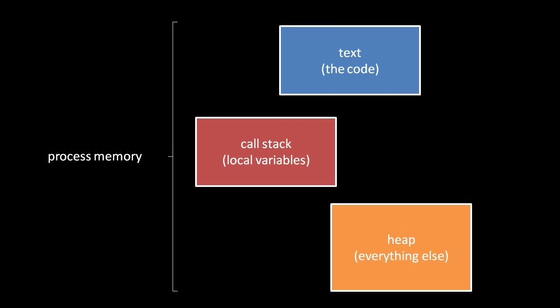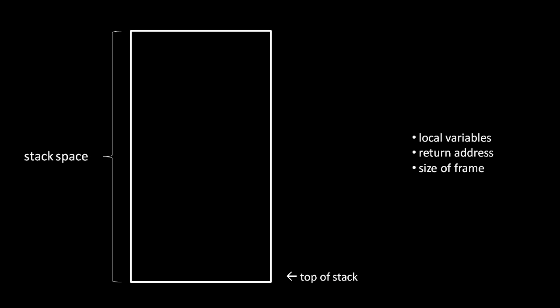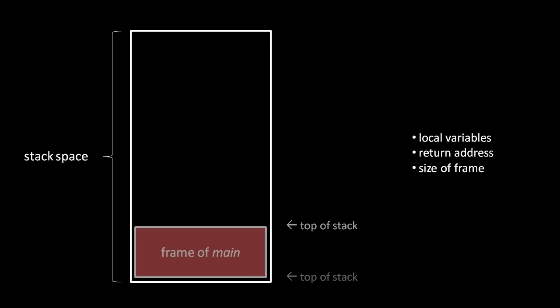The stack and heap are both for storing data. The difference is that the stack stores the local variables used by the process, and the heap stores everything else. The stack is a contiguous chunk of memory that starts out unused. When the first function is called — let's call it main — its local variables are stored on the stack in a grouping called a frame.